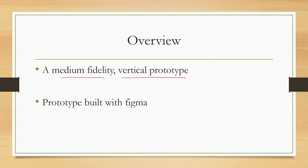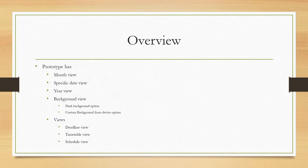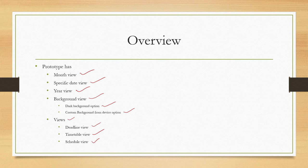A vertical prototype is not mandatory, so we will primarily focus on the different interfaces that are part of different stages of the prototype. The prototype has been built with the Figma tool. The prototype has a month view, specific date view, year view, background view where background can be changed, dark background, custom background, then other views like deadline views, timetable view, and schedule of a day view. All these things are supported as results of the analysis of the functional hierarchy.